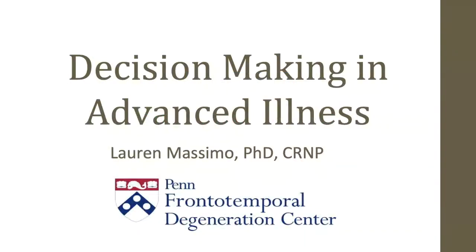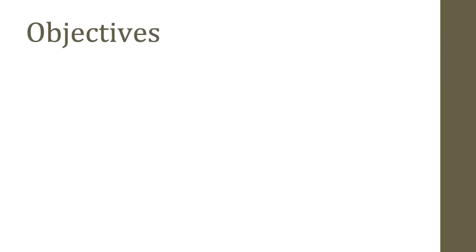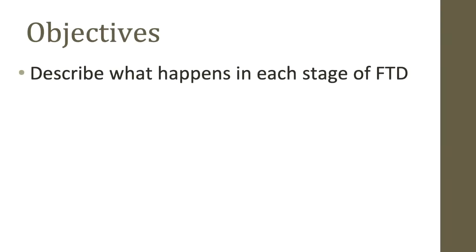Hi, my name is Lauren Massimo, and I'm going to be talking about decision making in advanced illness. In order for you as caregivers to make effective decisions on behalf of your loved one with frontotemporal degeneration, we need to think about the natural history of the disease and common issues that can arise around the end of life. I'm first going to talk about what happens in each stage of the disease.